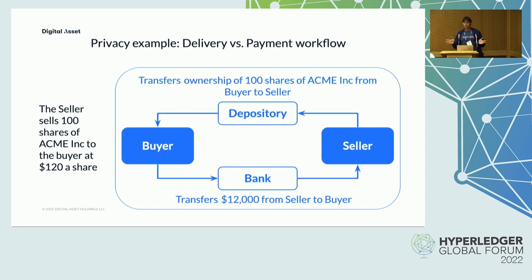The depository and the bank should not be privy to any other details of this business transaction. This example illustrates the need to have privacy enabled at the sub-transaction level. A system where all transaction details are revealed to all parties cannot facilitate this essential business workflow. In the real world, there are many more parties representing layers and layers of intermediaries involved in such a transaction.